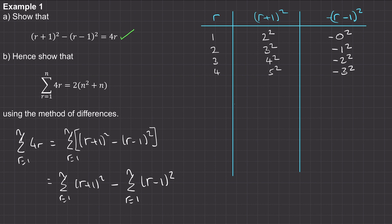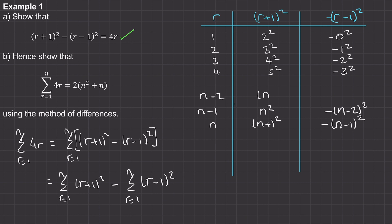Now we look at the last term, when r equals n: we have n plus one squared in the second column, minus n minus one squared in the third column. For r equals n minus one, n minus one plus one gives n squared, and minus n minus one minus one gives minus n minus two squared. And r equals n minus two gives n minus one squared and minus n minus three squared. These are all the terms in between.